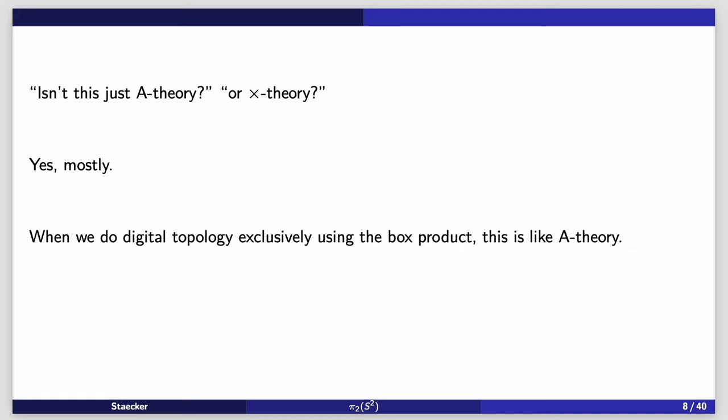Around now, you might be wondering to yourself, isn't this just the same as A theory? Or maybe the cross homotopy theory, if you're using categorical things? And my answer would be yes, mostly. I would say when we do digital topology using the box product all the time, this is like A theory. And maybe you can omit the word like. As far as I can tell, this is basically the same as A theory. Although we traditionally only consider graphs which you can get from grids.